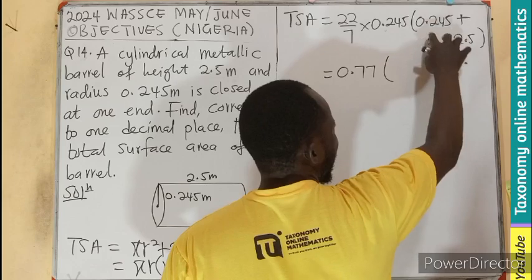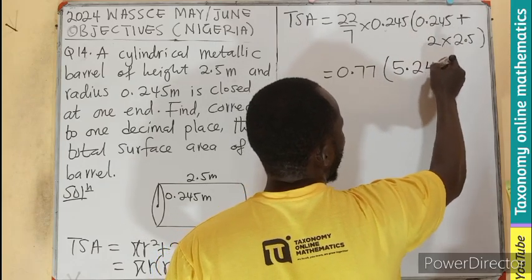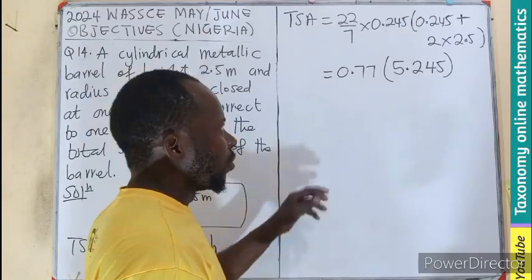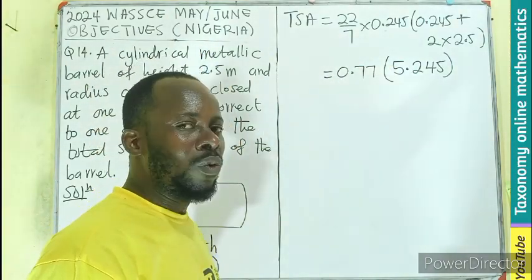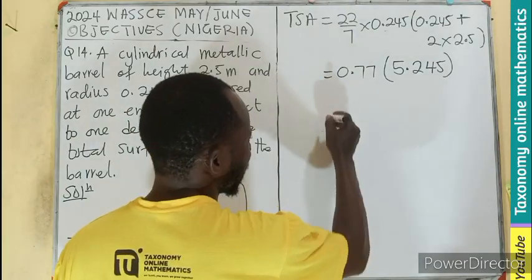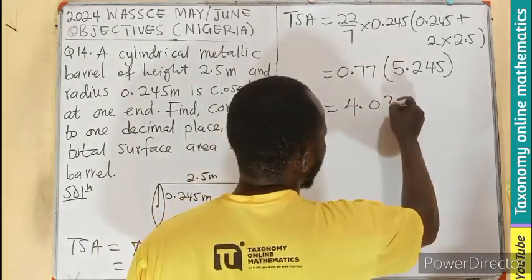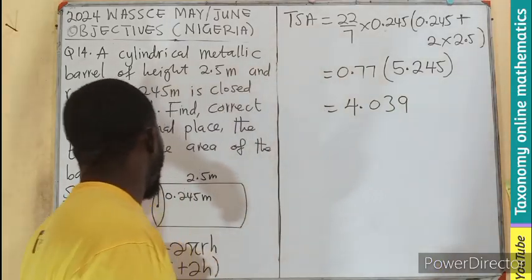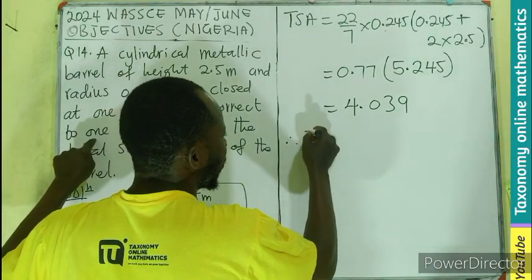5 plus 0.245 will be 5.245. So 0.77 times 5.245, and on the calculator we'll be having 4.039. But we are asked to leave the answer in one decimal place.